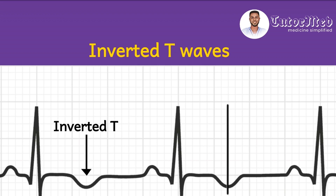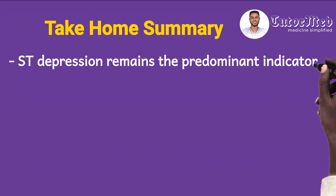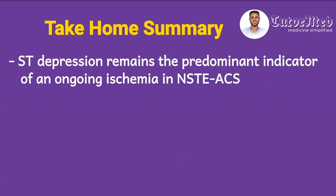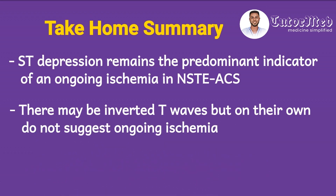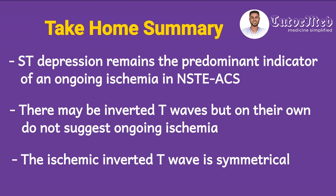Take-home summary: Remember that ST segment depression remains the predominant indicator of an ongoing or acute ischemia in non-ST elevation acute coronary syndrome. There may be associated inverted symmetrical T waves, but on their own they do not suggest an ongoing or acute ischemia — although they may suggest that ischemia has occurred. Note that the ischemic inverted T wave is a symmetrical T wave.